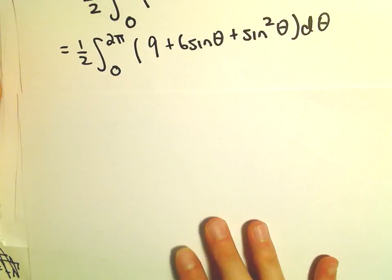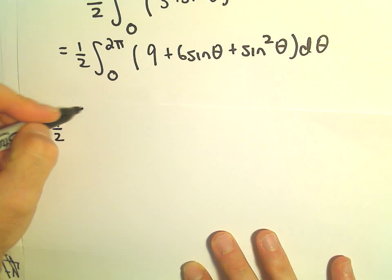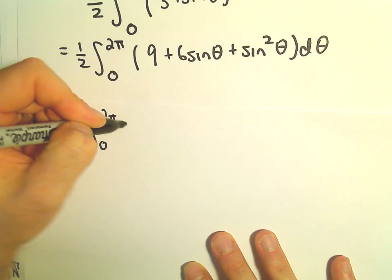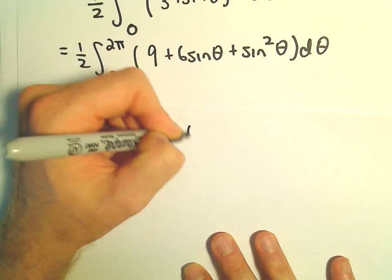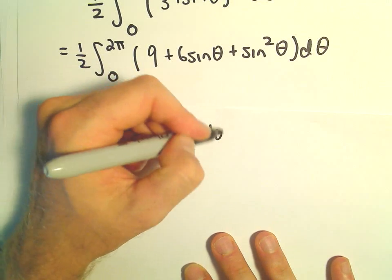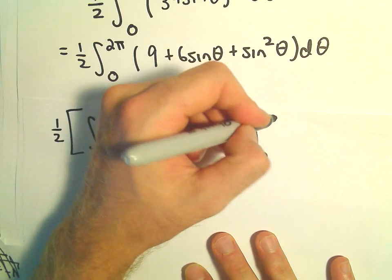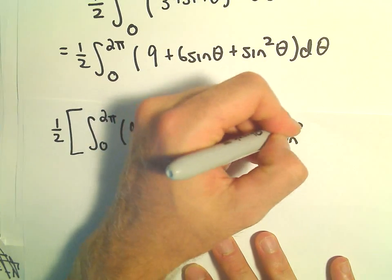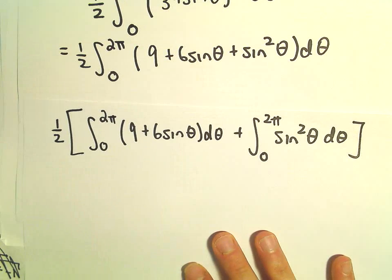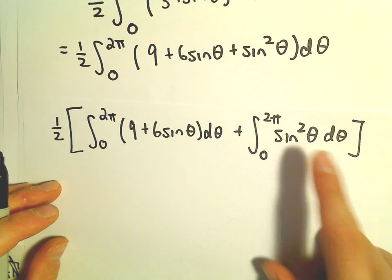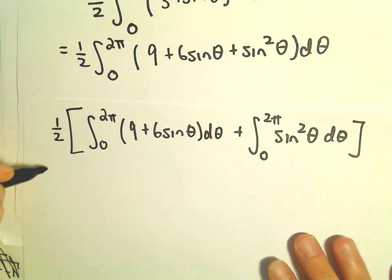So I'm going to break this integral up. So we have 1 half. I'm going to do the integral from 0 to 2 pi of 9 plus 6 sine theta d theta. And then we'll add to that the integral from 0 to 2 pi of sine squared theta d theta.